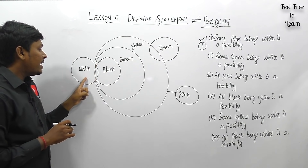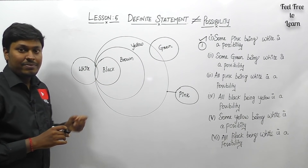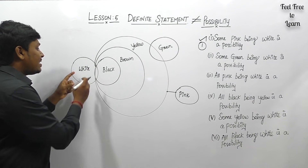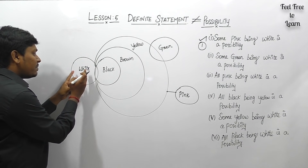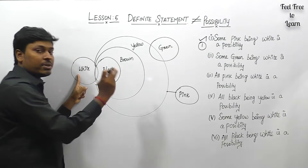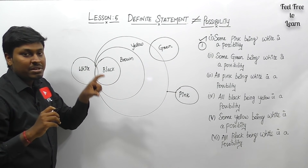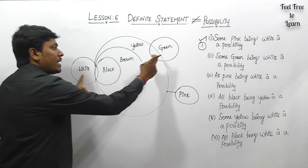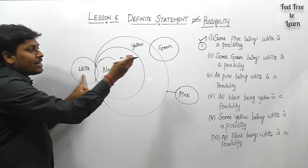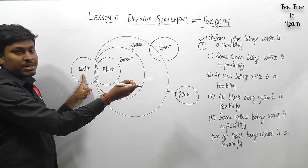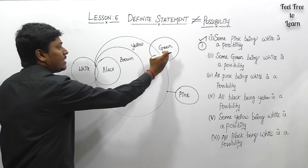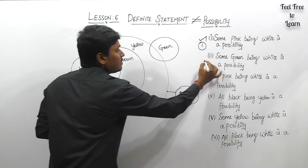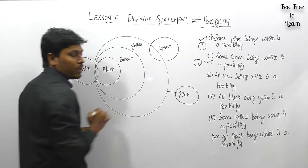Conclusion two: 'some green being white is a possibility.' There is no connection between white and green in the statement. According to case one — similar to no connection between cup and ball — white and green are both inside a single Venn diagram, so possibility follows.